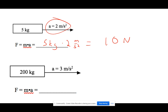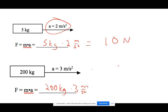Similarly, in this example, what's the force applied? Force equals mass times acceleration. My mass is 200 kilograms and my acceleration is 3 meters per second squared. Multiplying these gives me 600 Newtons.